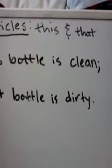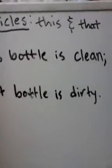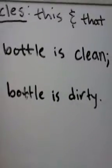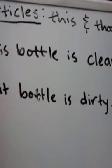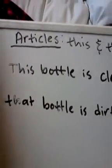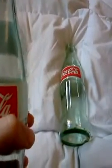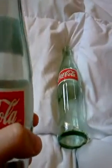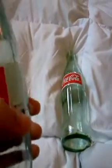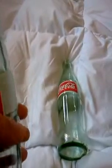In the sentence, this bottle is clean, that bottle is dirty — one bottle is clean and one bottle is dirty. Both are specific bottles. If I have a bottle and I say this bottle is clean, that bottle is dirty, then I'm saying the one I'm holding is clean, and the one I'm not holding is dirty.